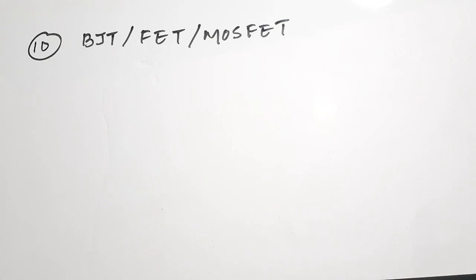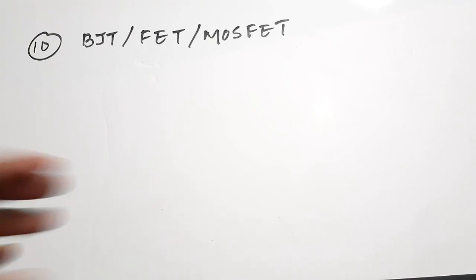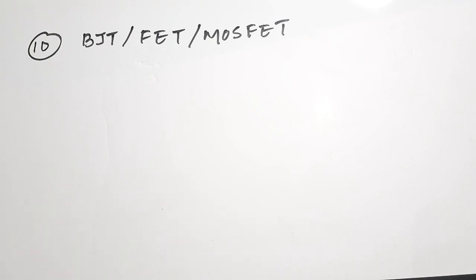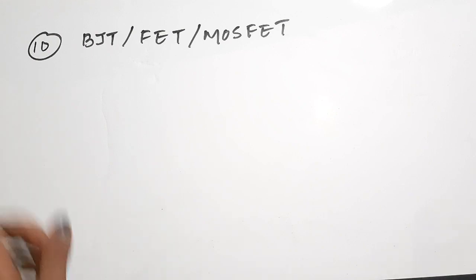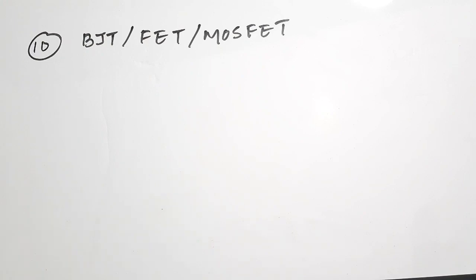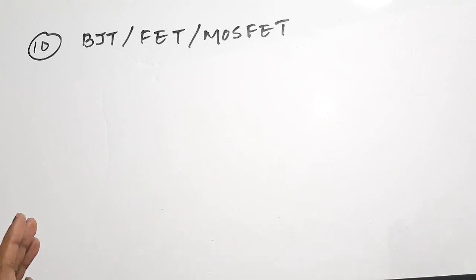The tenth topic is BJT, FET, and MOSFET — all three have equal weightage in competitive exam preparation. For BJTs, focus on various configurations, current gains, and calculating base and collector currents. For FETs, focus on drain current and drain saturation current. MOSFET voltage and current calculations are similarly important. These three are grouped together as the tenth topic.